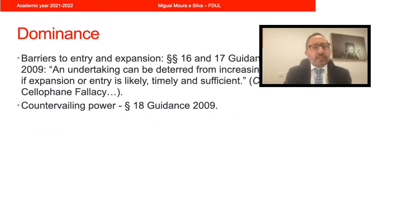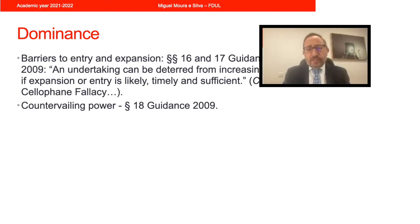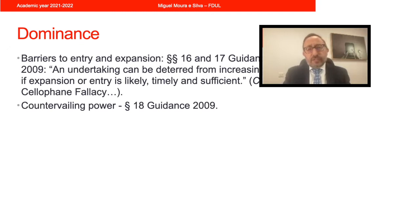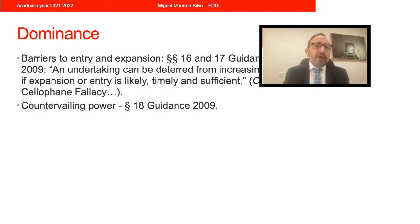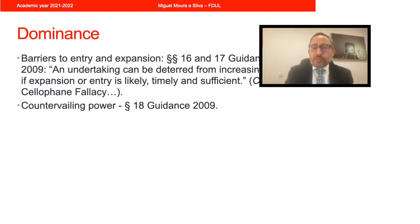In the 2009 guidelines, paragraphs 16 and 17 refer to barriers to entry and expansion. The idea is that even if a firm has high market shares, provided there is evidence that expansion or entry into the market is likely, timely, and sufficient to prevent the firm from exercising market power, then the firm may be held as not dominant. The final issue is countervailing power: if a firm has a high market share but faces a monopsony — a single client comprising all or most of the demand — its ability to exercise market power may be countered by that monopsonist on the other side of the market.